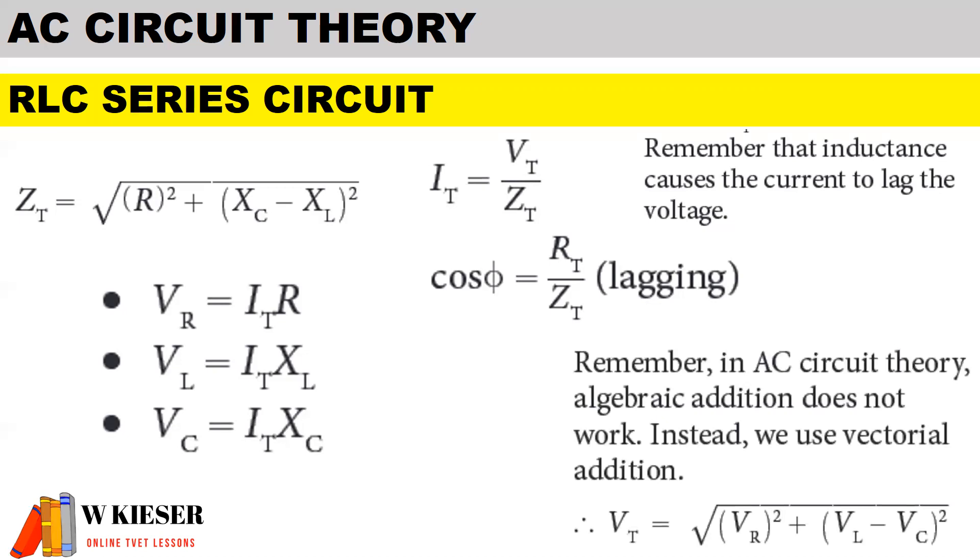Remember in AC circuit theory, algebraic addition does not work. Instead we use vectorial addition. So for an AC circuit V total is equal to square root over VR square plus VL minus VC square assuming it's a mainly inductive circuit.